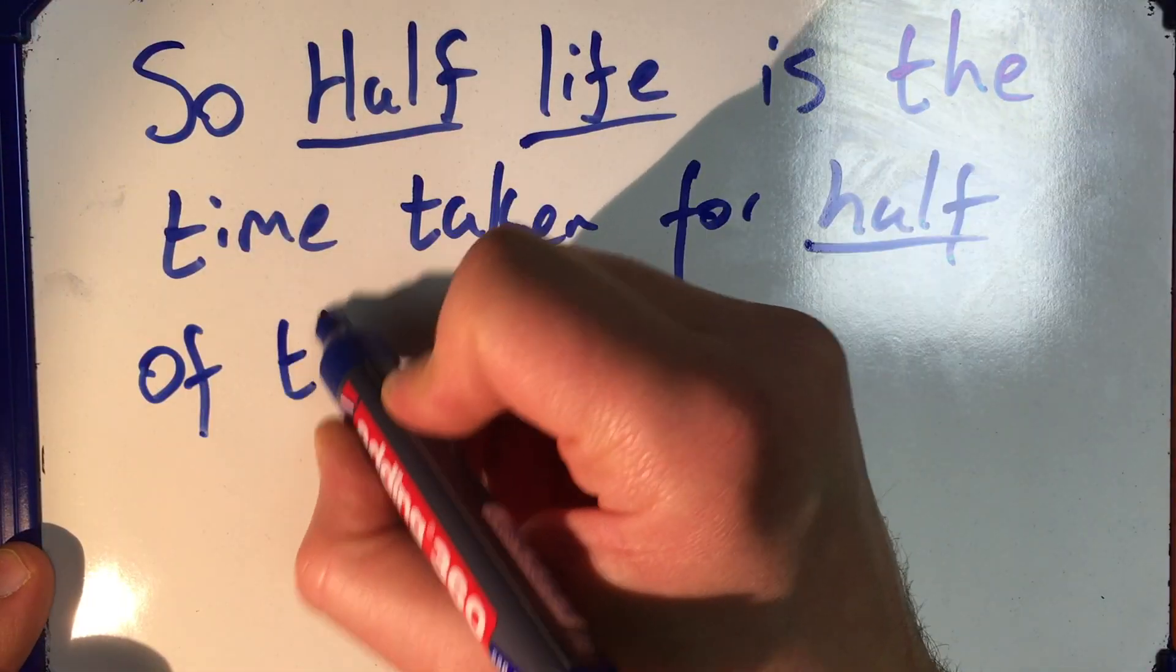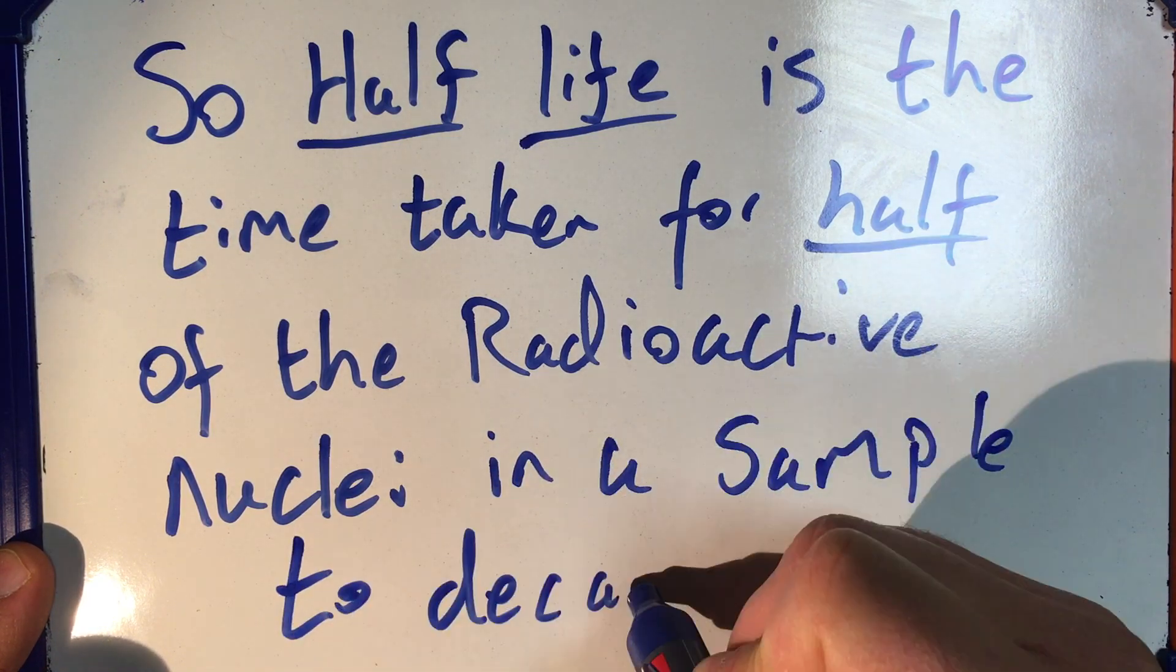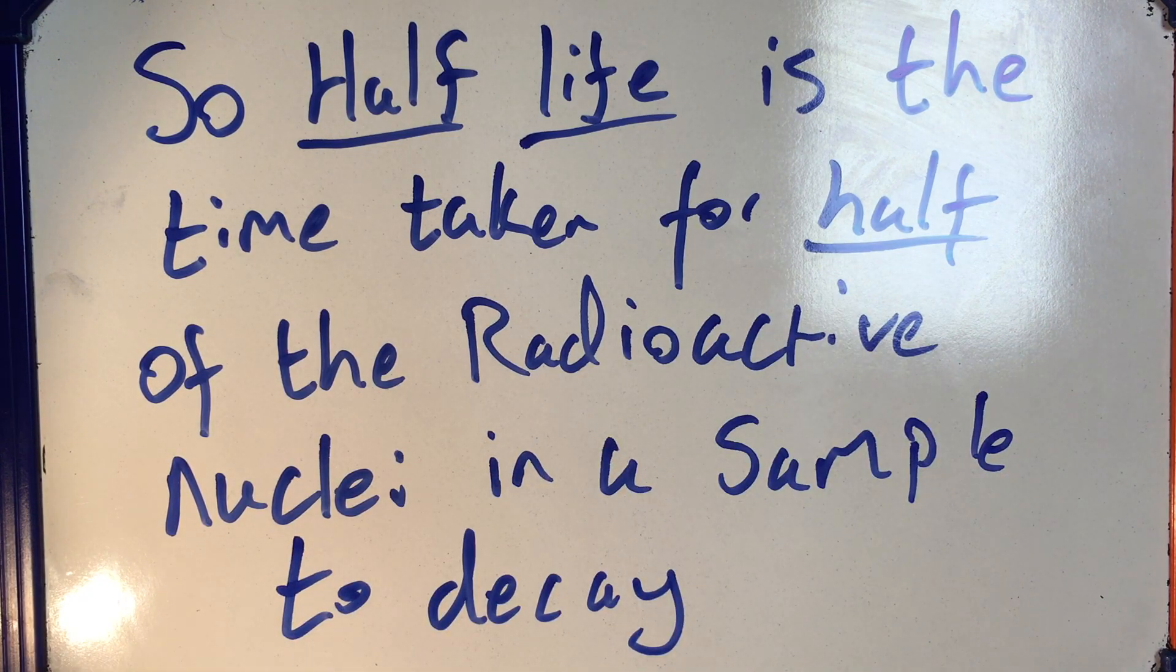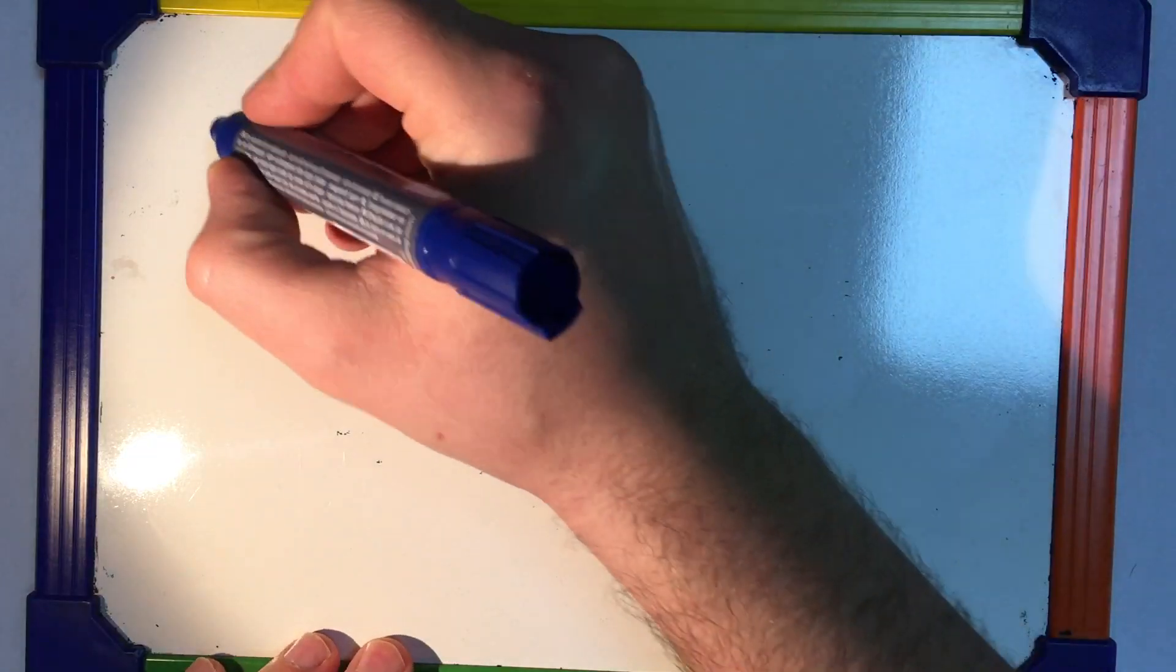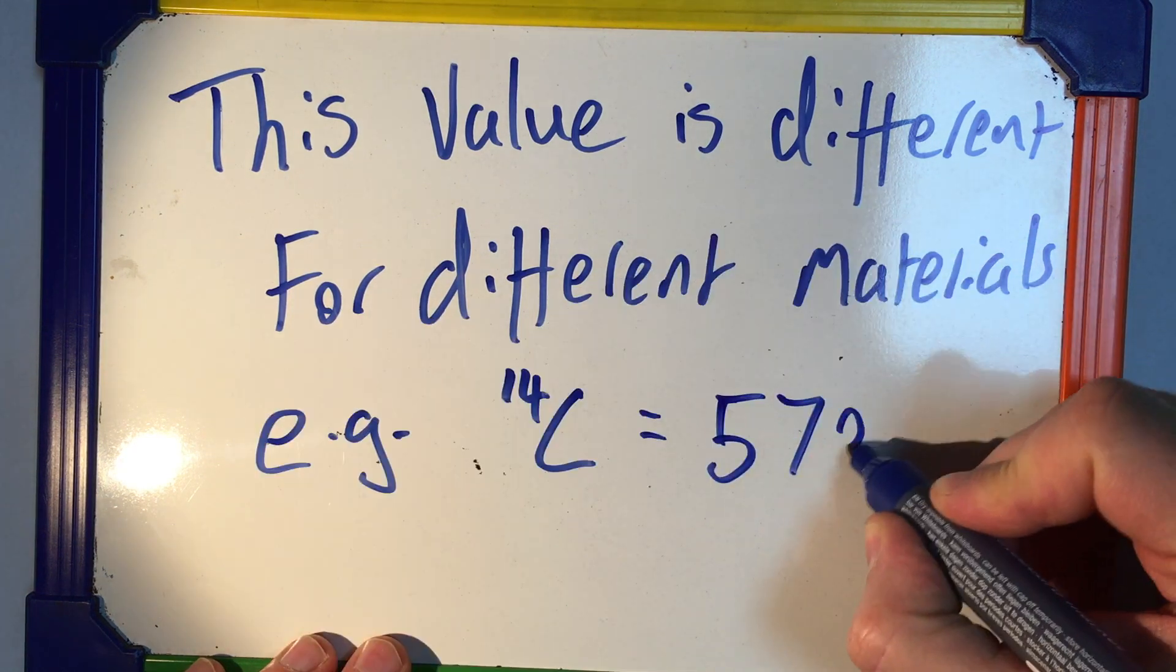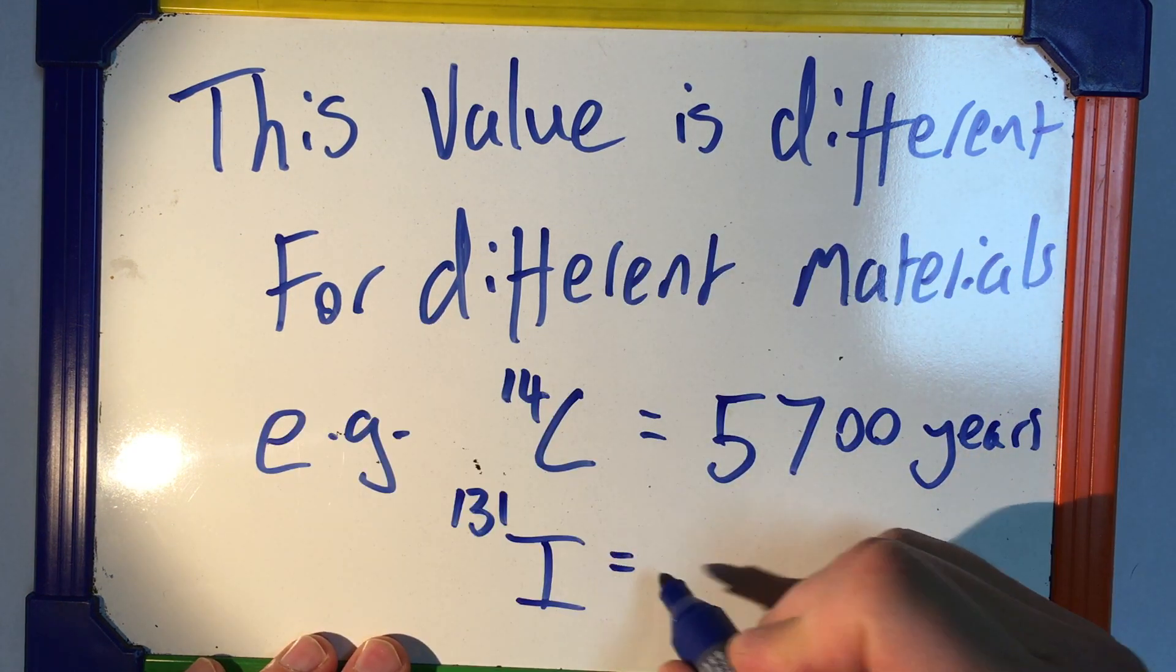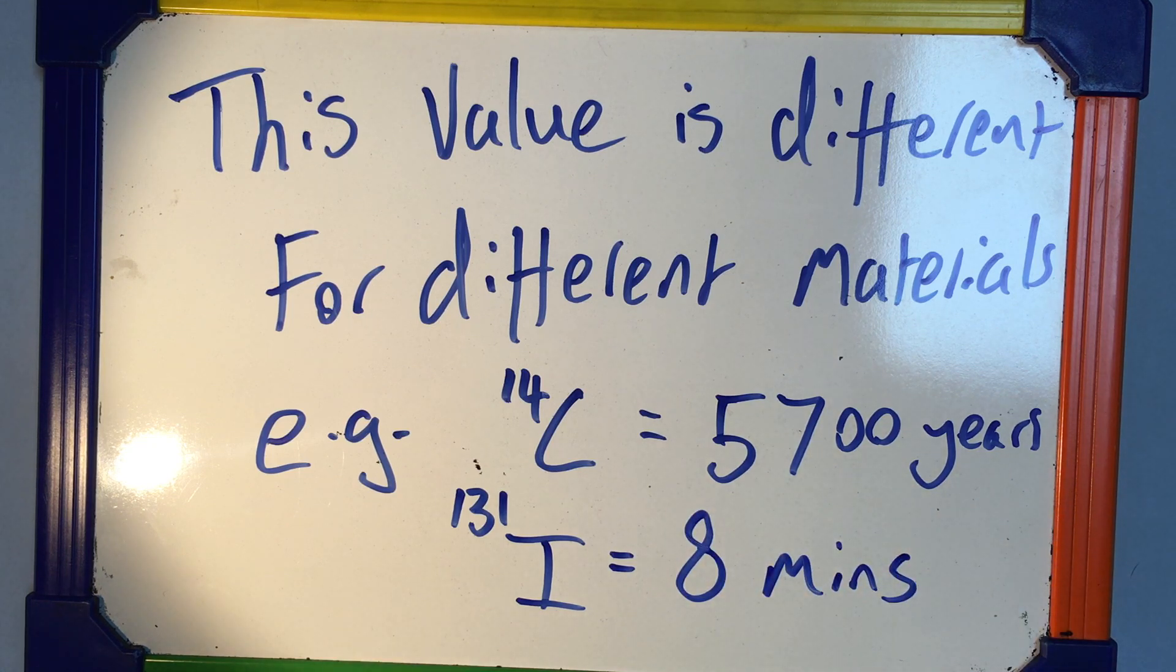Half-life is the time it takes for the radioactive nuclei in a sample to decrease by half. So for example, for my popcorn, the half-life was one minute. Now this value is different for different materials. For example, carbon-14 has got a half-life of around about 5,700 years, whereas iodine-131, that's got a half-life of around about 8 minutes.